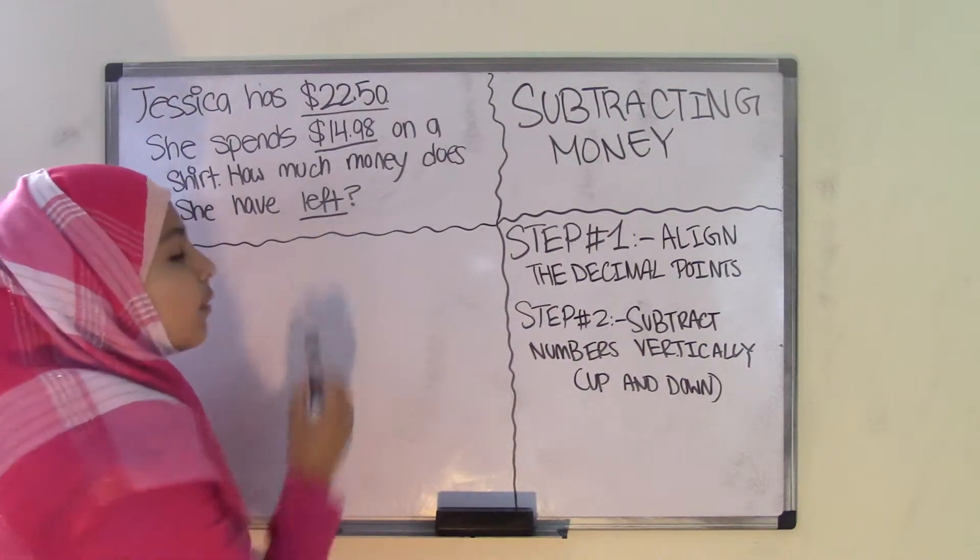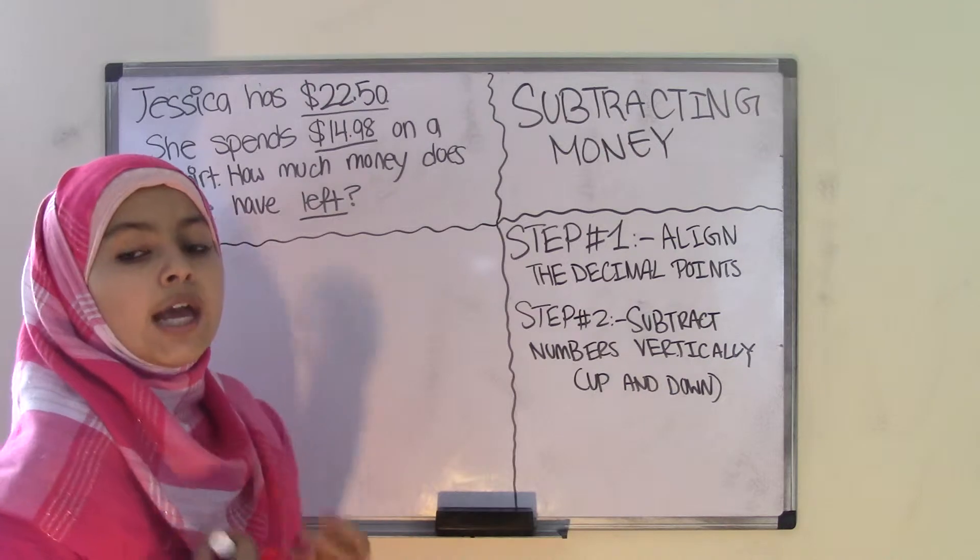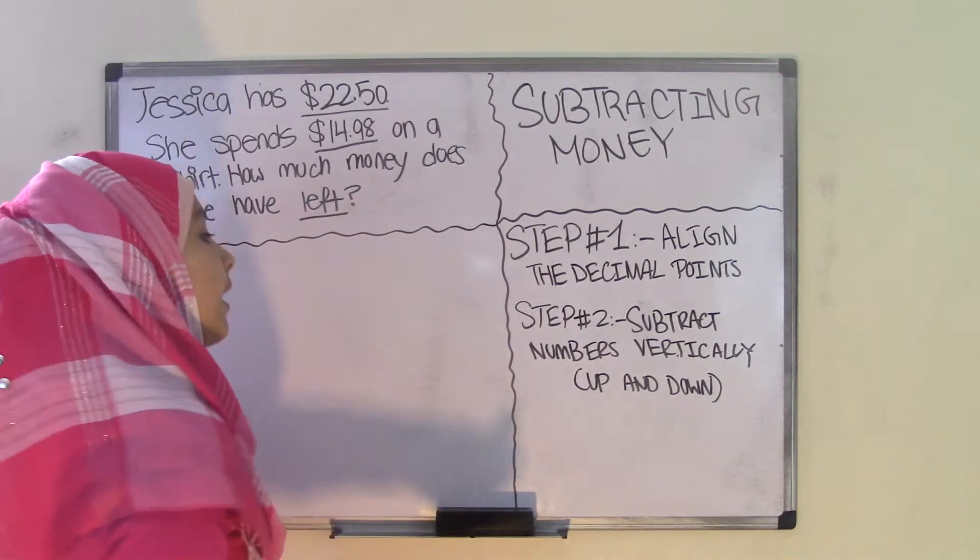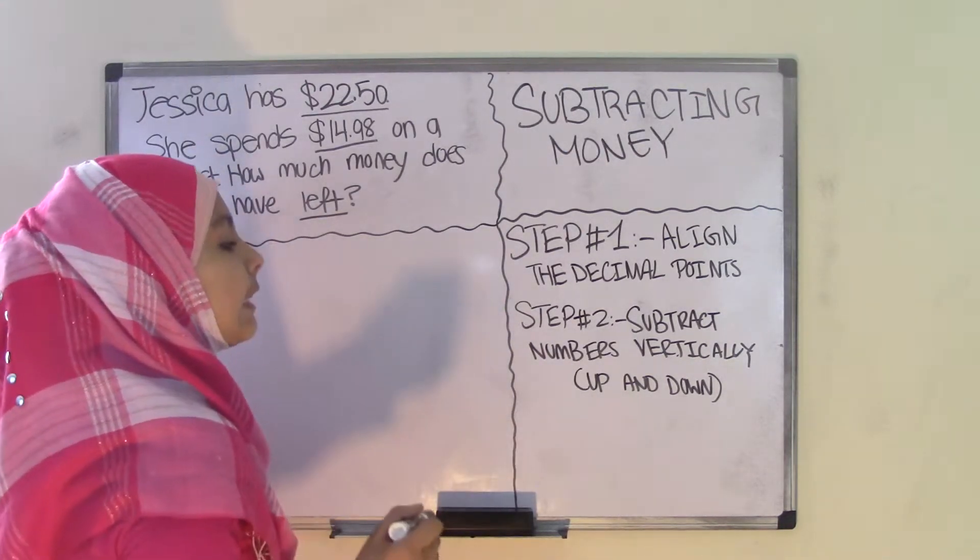According to the keyword left, we know that we have to subtract to find out how much she gets as her change. And according to that, step one says align the decimal points.